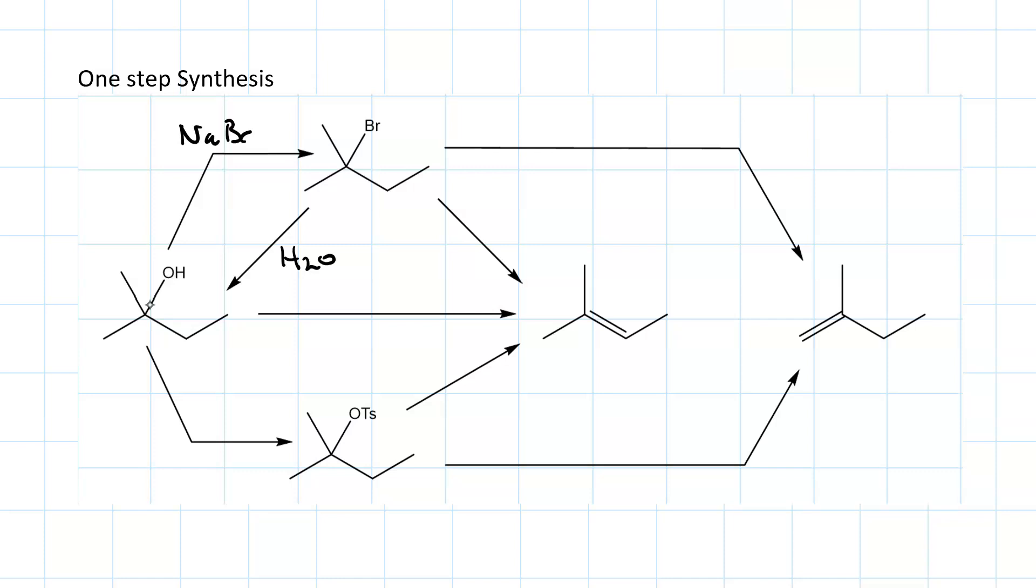To go to the Zaitsev alkene, we'd use sodium hydroxide. To take the alcohol to the tosylate, tosyl chloride and pyridine. To take the tosylate to the Zaitsev alkene, sodium hydroxide. And if we want to get the Hofmann alkene, tert-butoxide.